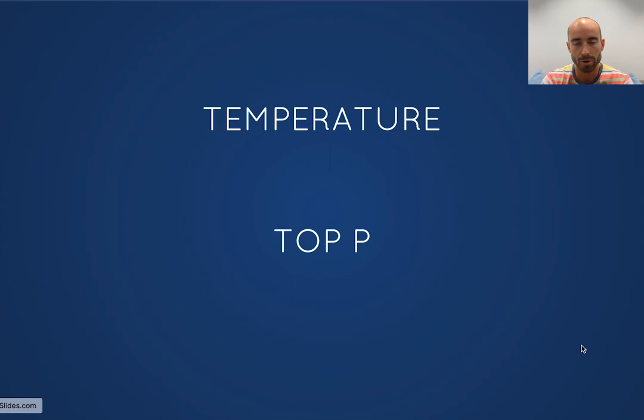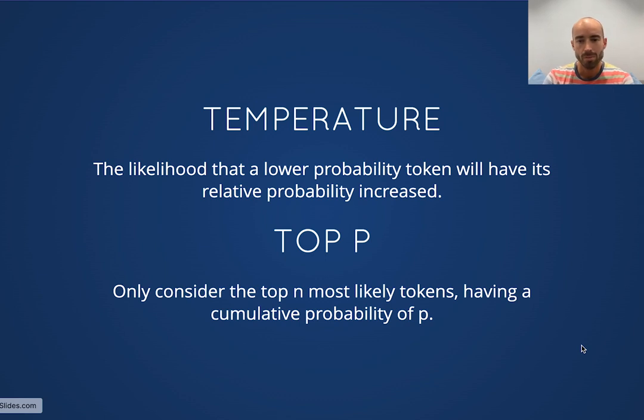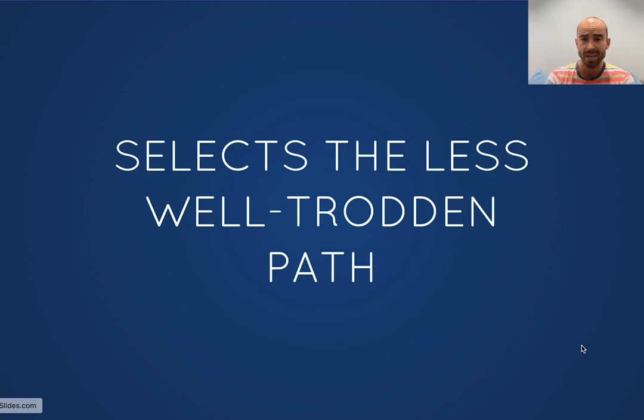Now there's a few parameters for working with the model which actually inform this behavior. This behavior is effectively randomly selecting from the next most likely tokens. Temperature is one of those parameters. The way temperature works is it's the likelihood that a lower probability token will have its relative probability increased. Top P only considers the top N most likely tokens having a cumulative probability of P. In both cases, they're effectively just adding randomness to push the loop away from always selecting the most likely next token. It's effectively just selecting the less well-trodden path.